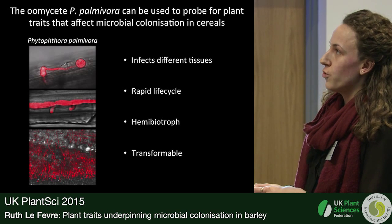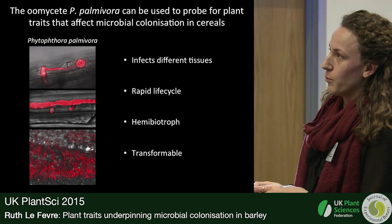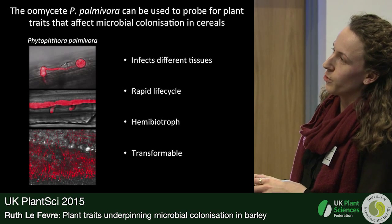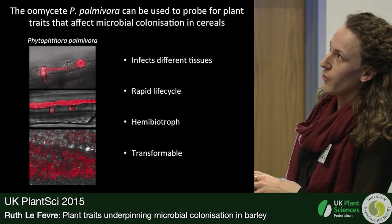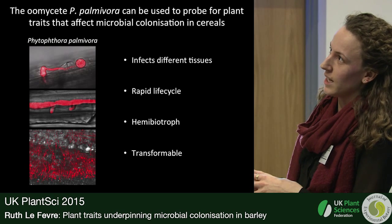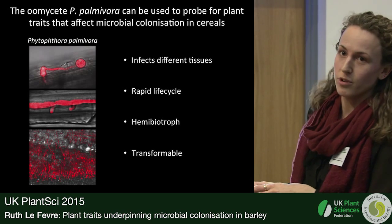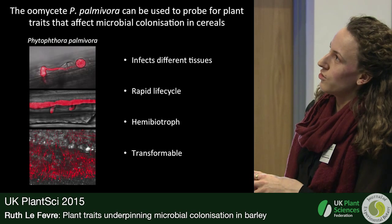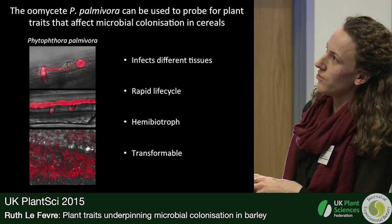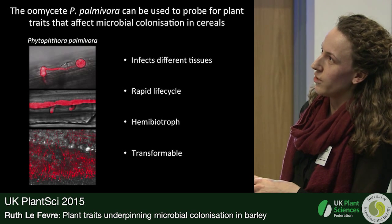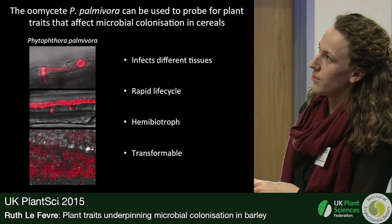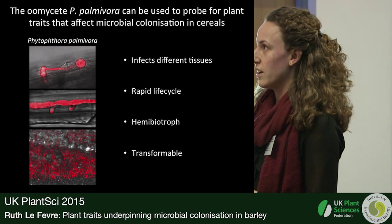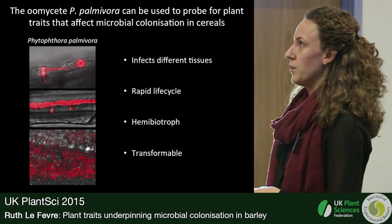It's also transformable, which is really important. These pictures here are confocal microscope pictures of the pathogen in our lab expressing a red fluorescent protein. This is a spore that has germinated and is penetrating barley tissue, and this allows us to track its progress through plant tissue.